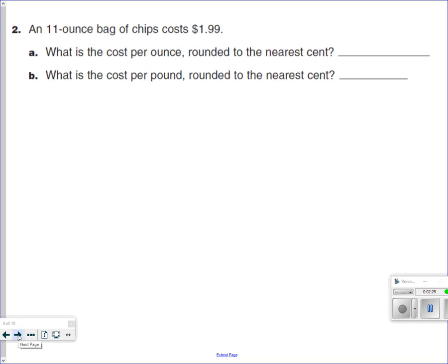11 ounce bag of chips costs $1.99. So we have an 11 ounce bag is $1.99. What is the cost per ounce? So I'm going to do $1.99 divided by 11, and I'm going to get 18 cents an ounce. 0.18 an ounce. So 1 ounce is 0.18.